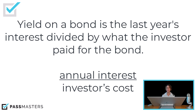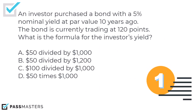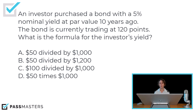Let's practice some questions. An investor purchased a bond with a 5% nominal yield at par value 10 years ago. The bond is currently trading at 120 points. What is the formula for the investor's yield? Did you notice they gave you information to be able to answer the current yield question? But that's not what they asked you. The test loves to trick you — they love to give you information that is irrelevant. Be careful when you read the question to disregard information that is not helpful to the actual question.